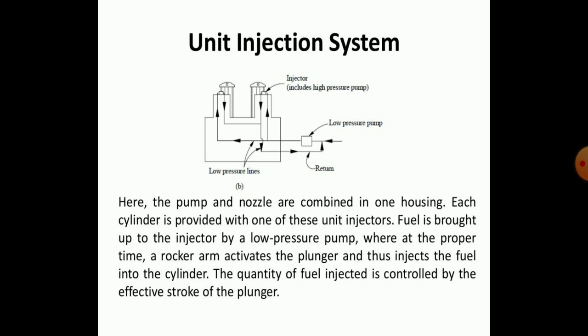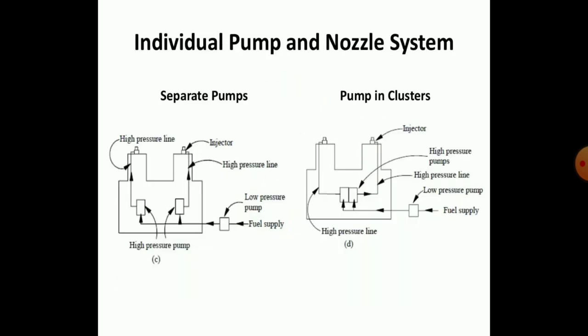The unit injection system combines the pump and nozzle in a single housing. Each cylinder is provided with one of these unit injectors. Fuel is brought to the injector by a low pressure pump, and at the proper time, a rocker arm activates the plunger to inject fuel into the cylinder. The quantity of fuel injected is controlled by the effective stroke of the plunger.